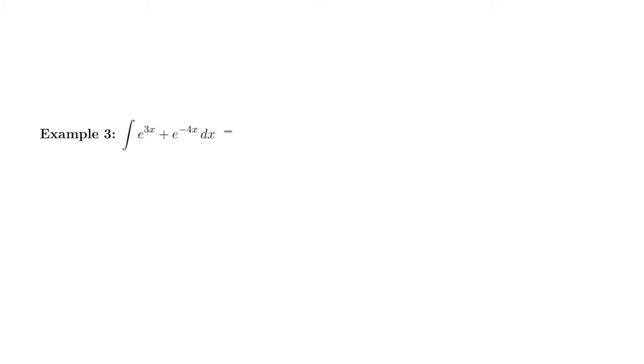So it's actually two u-sub problems at once. The first thing I would do is I would separate these using that sum and difference rule that we learned earlier. We could just say this is e to the 3x dx plus e to the negative 4x dx, just to separate the two pieces.